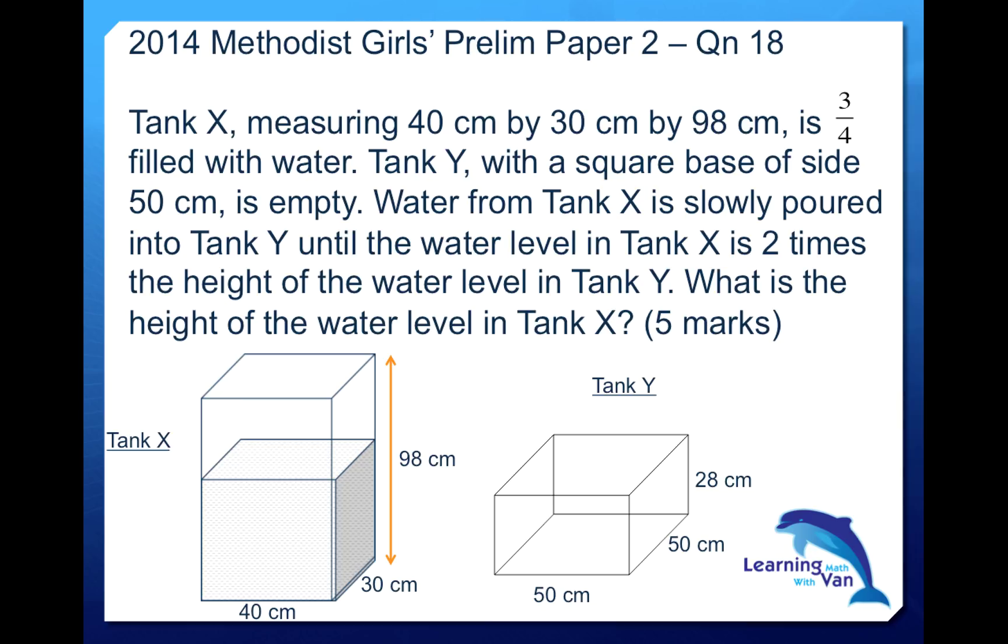It looks difficult, but actually, in fact, it's not. Tank X, measuring 40 cm by 30 cm by 98 cm, is three-quarters filled with water. Tank Y, with a square base of side 50 cm, is empty. Water from Tank X is slowly poured into Tank Y until the water level in Tank X is two times the height of the water level in Tank Y. So what is the height of the water level in Tank X?